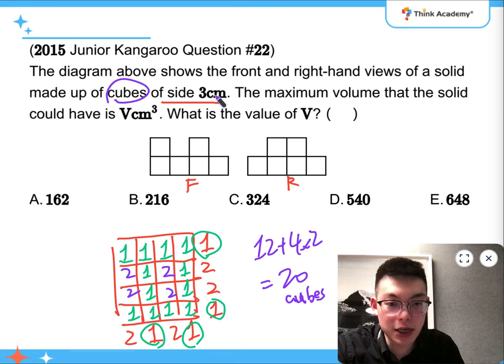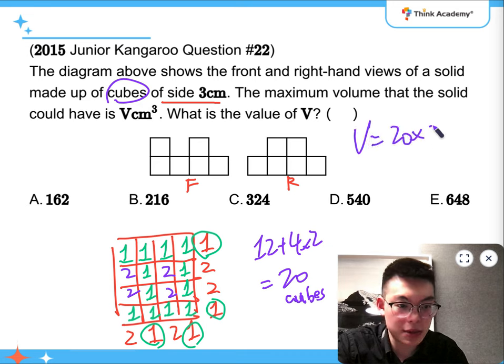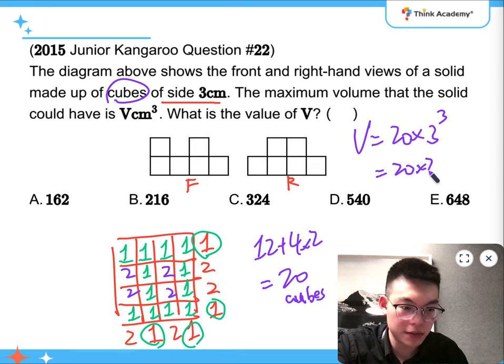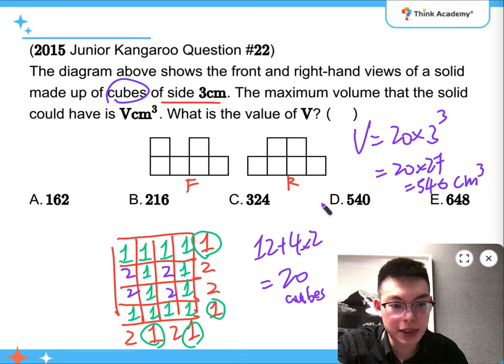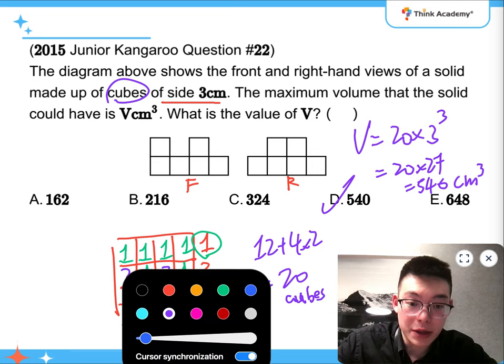Each cube has side 3 centimeters, so the volume is going to be 3 cubed, that is 27. So V is going to be 20 times 3 cubed, which is 20 times 27, that's going to be 540 cubic centimeters. All right, so the answer is D for this question.